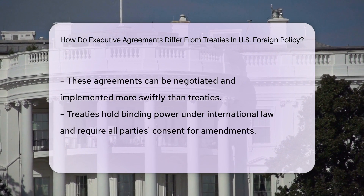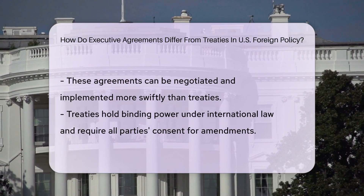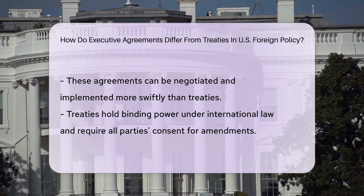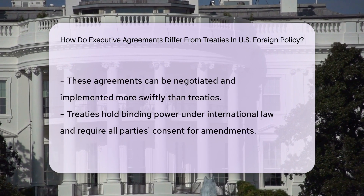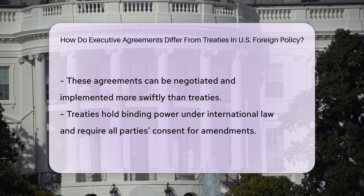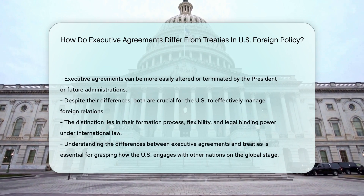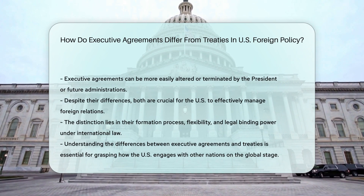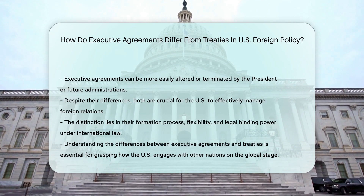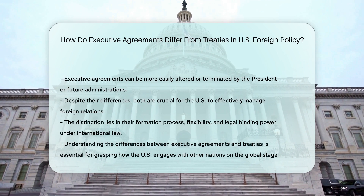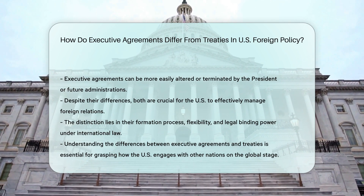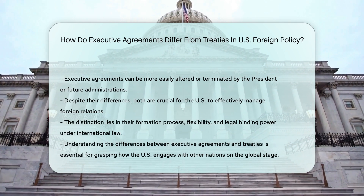While treaties are binding under international law and can only be changed with the consent of all parties, executive agreements can be altered or terminated more easily by the president or succeeding administrations. Despite these differences, both executive agreements and treaties are essential tools for the U.S. government to conduct foreign relations effectively.